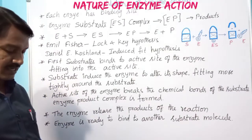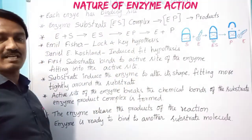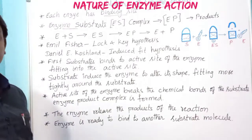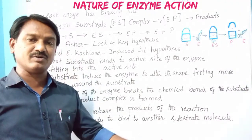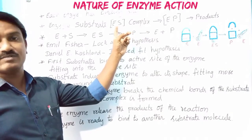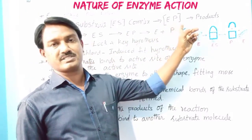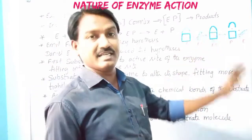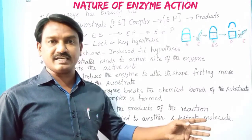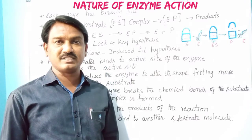Today we are discussing the nature of enzyme action — how enzymes speed up the rate of reaction. Each enzyme contains binding sites, which are nothing but activation sites. When an enzyme combines with the substrate, an enzyme-substrate complex is formed. That complex is short-lived. After some time the enzyme leaves the products, an EP complex is formed, and finally products are released. There is no change in the structure of the enzyme.